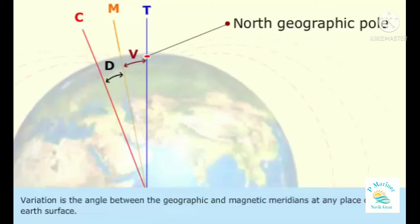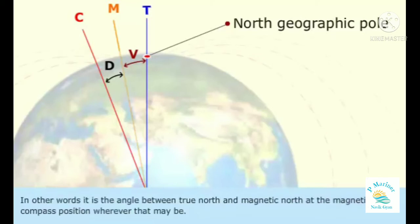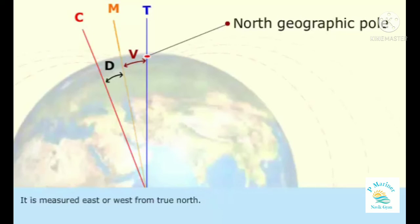Variation is the angle between the geographic and magnetic meridians at any place on the Earth's surface. In other words, it is the angle between true north and magnetic north at the magnetic compass position, wherever that may be. It is measured east or west from true north.